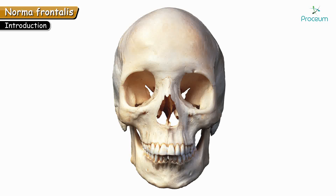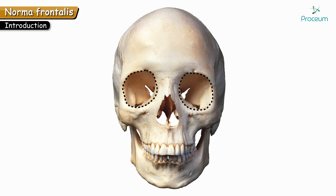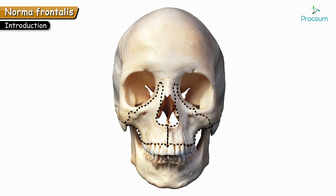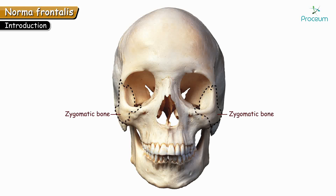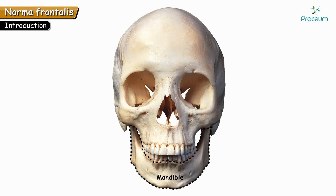The first bone which forms the forehead is the frontal bone, which is an unpaired bone. Just below the frontal bone there are two large apertures called orbits, and below these bony sockets where the eyeballs are present, the upper jaw is formed by a pair of maxillae. There are a pair of nasal bones which form the root of the nose, and the cheek bones are called zygomatic bones, present on either side of the facial skeleton. Lastly, the mandible is present in the lower part of the facial skeleton, forming the lower jaw, and it is an unpaired bone.